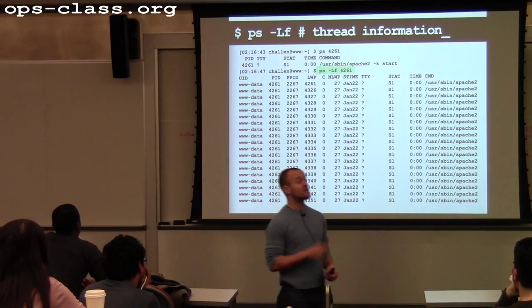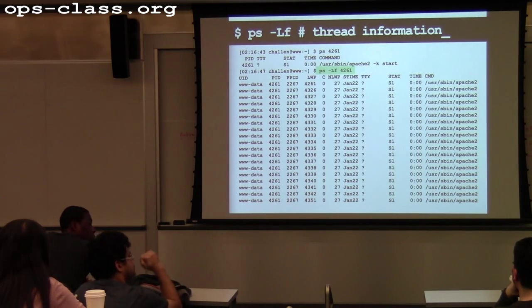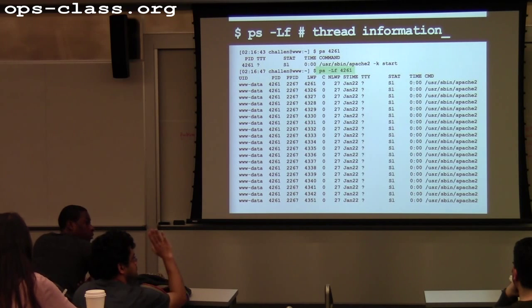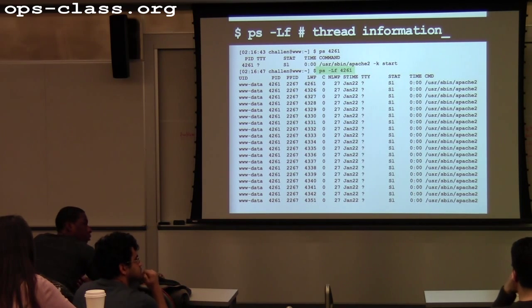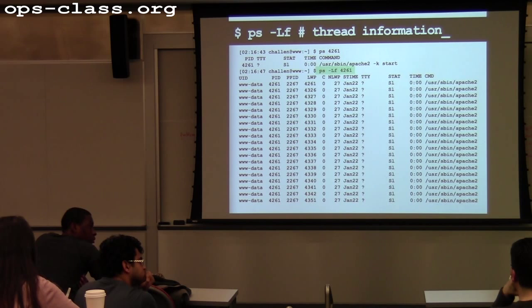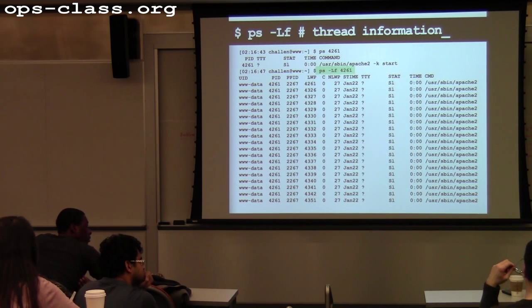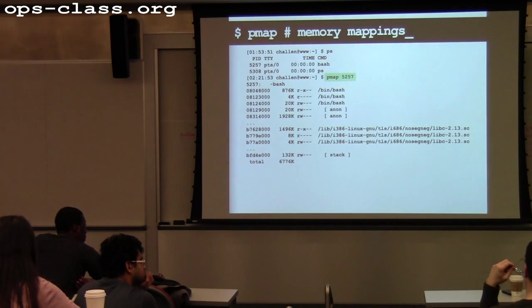We found out some information about Apache when we talked about why it might have multiple threads. Why does Apache have multiple threads? To handle multiple requests. So let's finish up and use a couple of other tools to look at other information about the processes on the system.